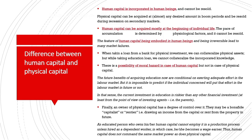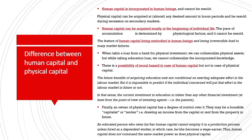The pace of accumulation of human capital is determined by physiological factors along with various other economic and social conditions. Therefore, human capital cannot be bought and resold like physical capital. This feature of human capital being embodied in human beings gives rise to various kinds of market failures. For example, when taking a loan from a bank for physical investment, we often collateralize physical assets, but while taking an educational loan, we cannot collateralize the incorporated knowledge embodied within human beings.